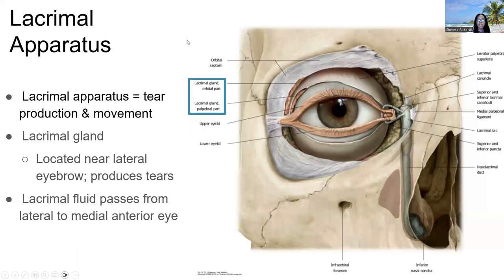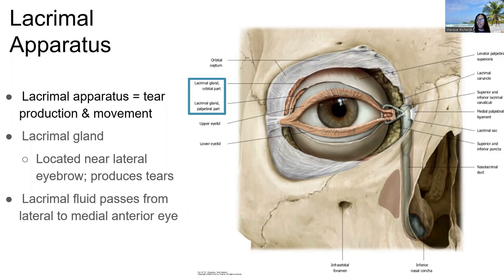The lacrimal apparatus refers to the structures in and around the eye responsible for generation, movement, and absorption of tears. Its function is keeping the eyes clean and sanitary — removing dirt, debris, and pathogens like bacteria. The lacrimal apparatus creates tears that wash particles towards the inner eye where they can be reabsorbed, eventually producing mucus that can be swallowed.